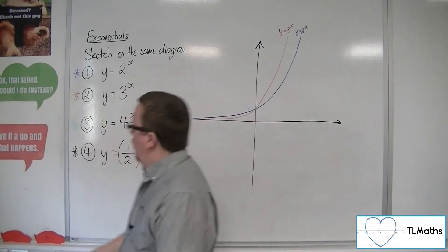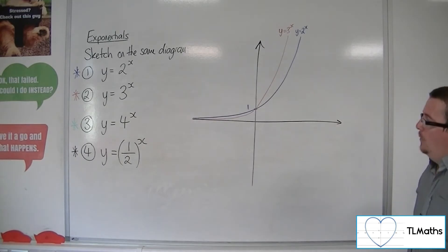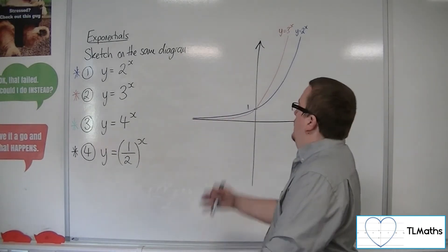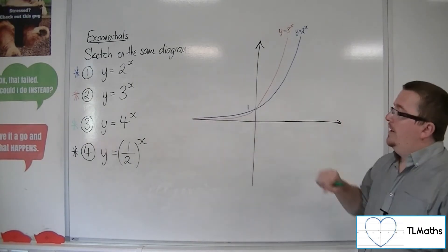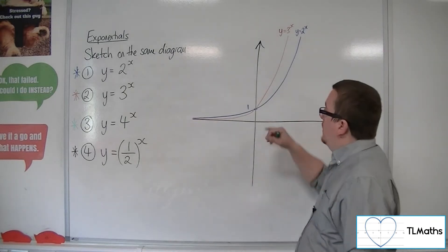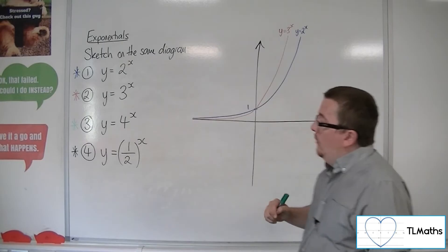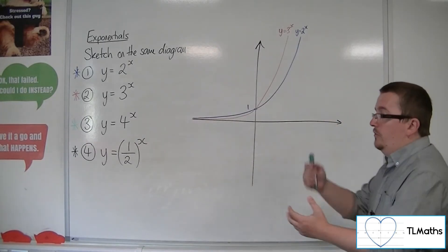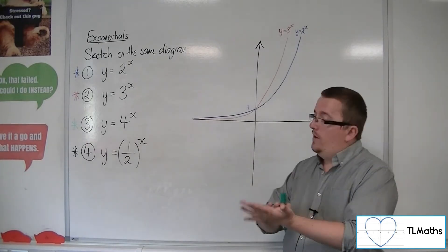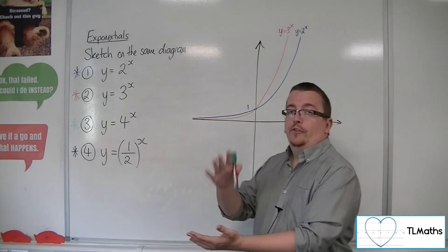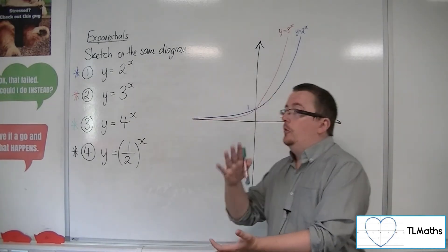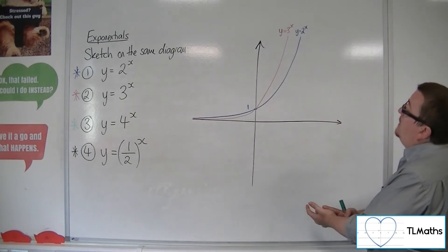So now, y equals 4 to the x. Well, in much the same way, when x is 0, you're going to get 4 to 0, which is 1. So it goes through 1. As x is increasing, so 1, 2, 3, the y values are going to go 4, 16, 64. So it's increasing even faster than 3 to the x.